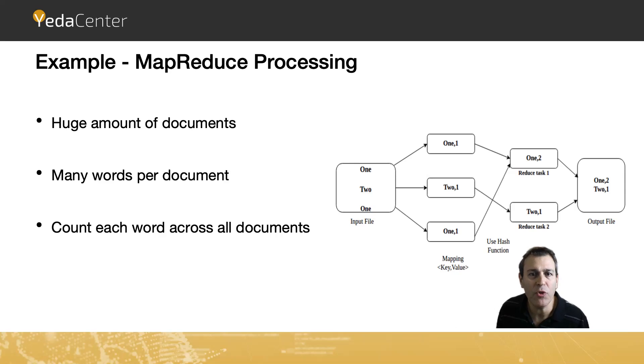So MapReduce comprises two main tasks. One is the mapping and the second one is the reduce task. The mapping is called by its name Map, as a map model that has key-value store.